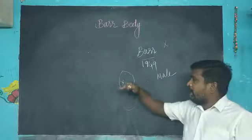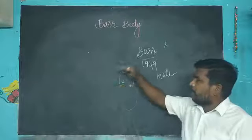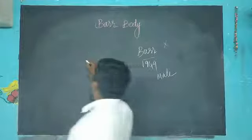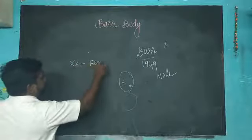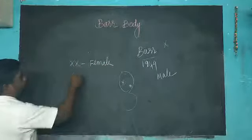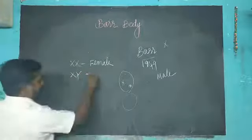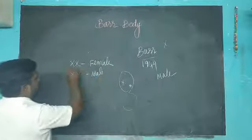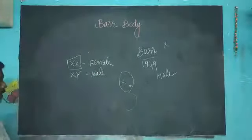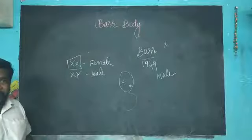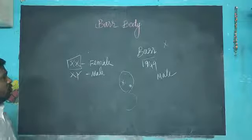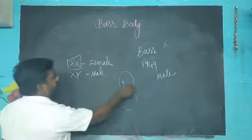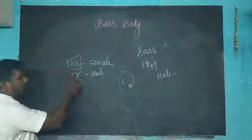Even though two X chromosomes are there in the female, only one X is enough to represent the characteristic features. The other X will be inactivated, condensed, and formed as a Barr body. But in the male, only one X chromosome is there...